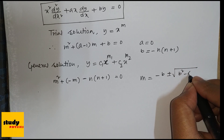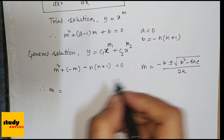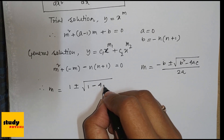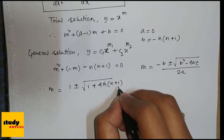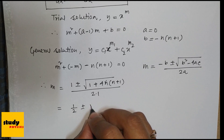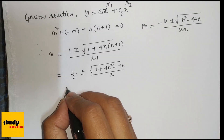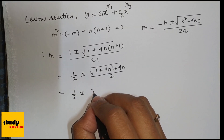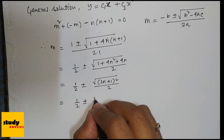Using the Sridharacharya (quadratic) formula: m = [−b ± √(b²−4ac)] / 2a, we get m = ½ ± √(1 + 4n² + 4n) / 2, which simplifies to m = ½ ± √((2n+1)²) / 2.